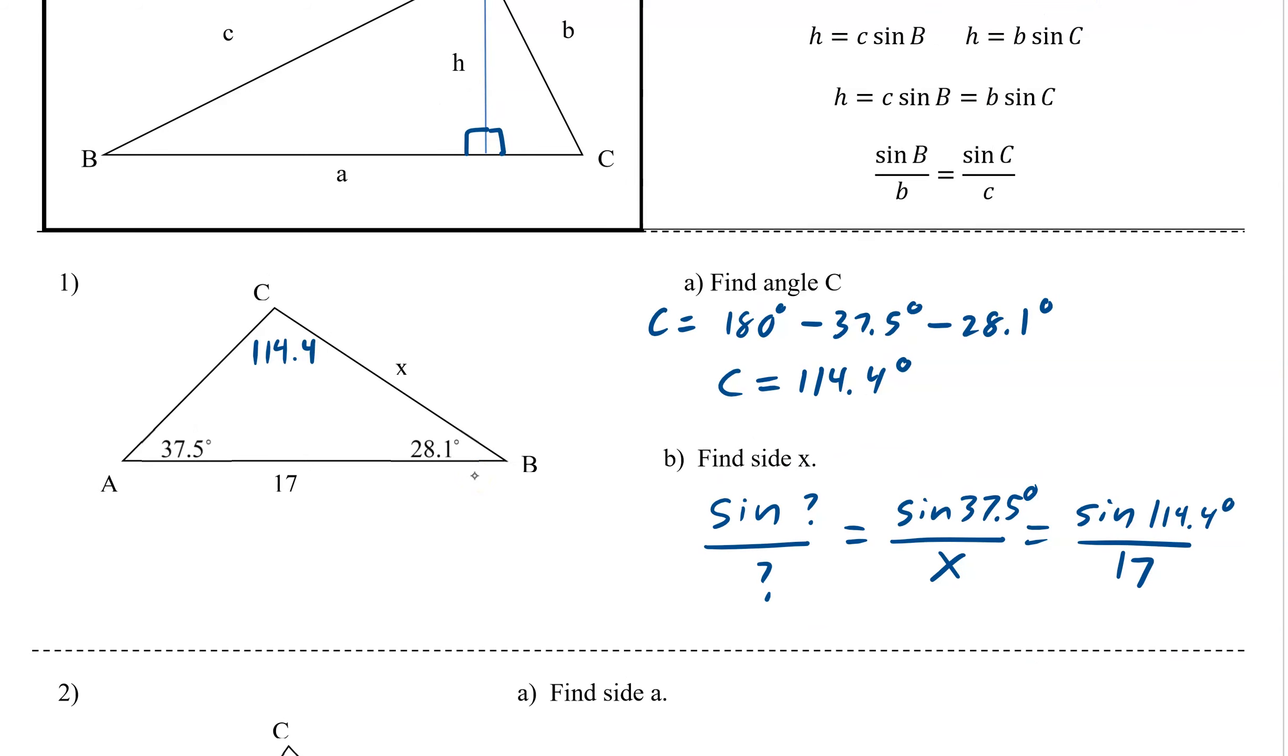Now we have our proportion, which we can then solve. It's going to be cross-multiplying and then dividing. We would have 17 sine of 37.5 degrees equals x sine of 114.4 degrees. Then you would divide by whatever's next to the x. Giving us x equals 17 sine of 37.5 degrees over sine of 114.4 degrees. As you do more of these, you're going to notice that these two were multiplied, and these two are multiplied. All we really did is we took the x and the sine of 114.4 and we just switched them. We took these two and switched them. The 17 gets put with that one. So it's this times this divided by this.